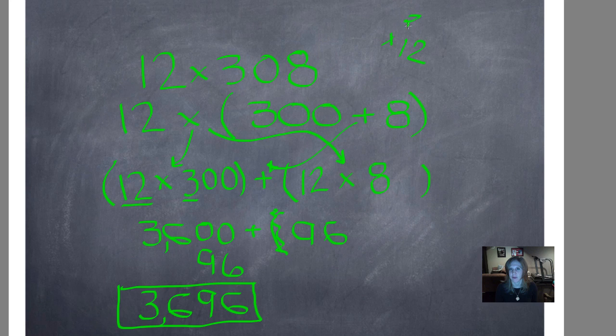12 times 308: 2 times 8 is 16, 2 times 0 is 0 plus 1 is 1, 2 times 3 is 6.